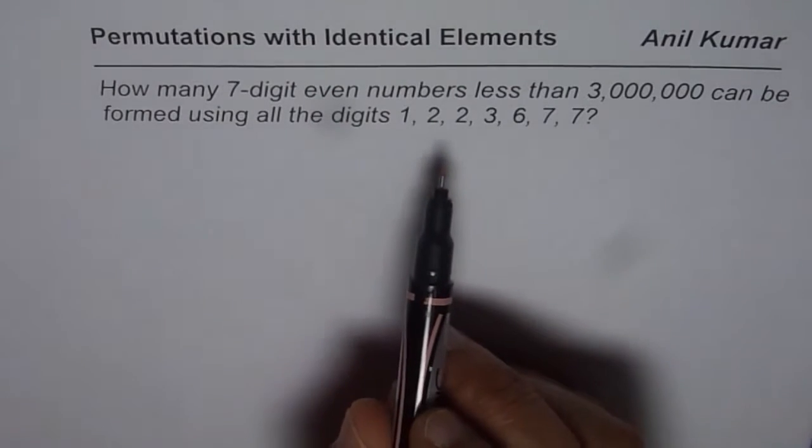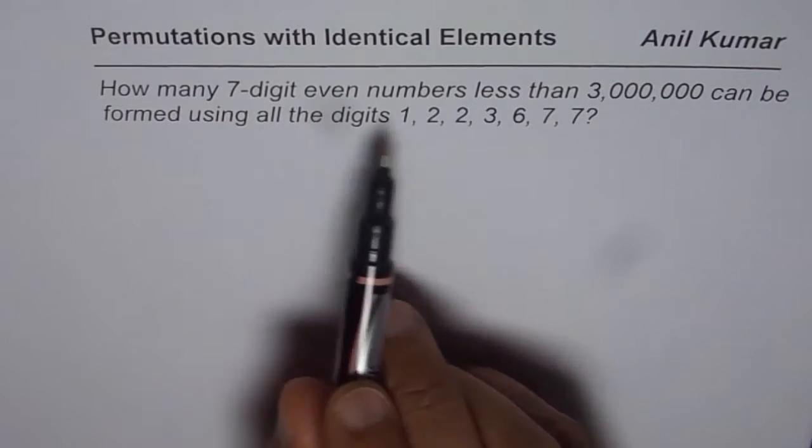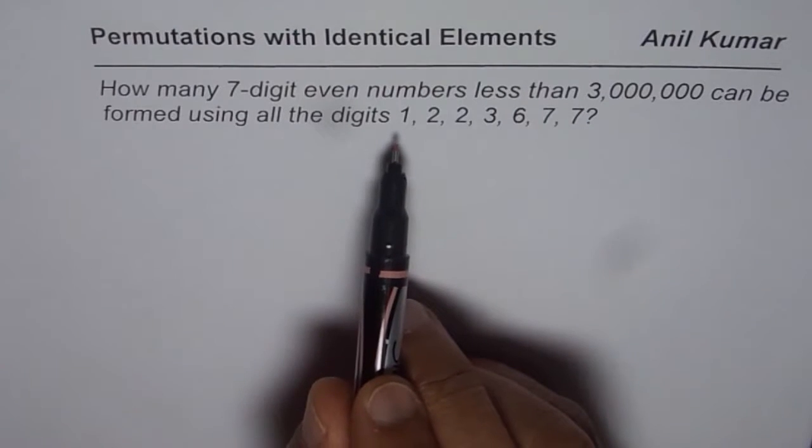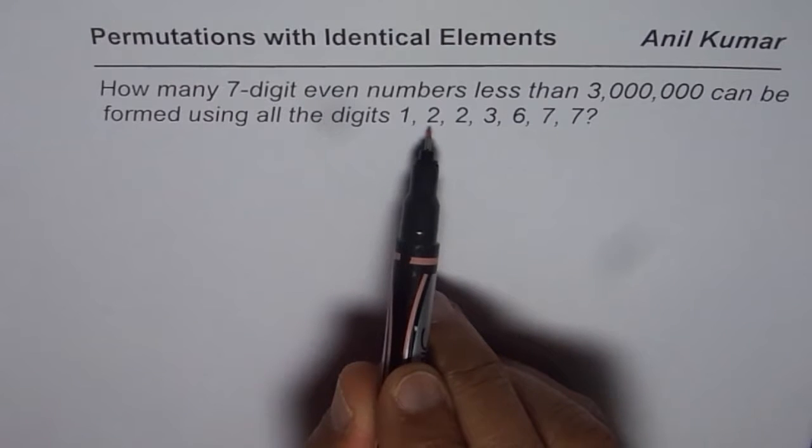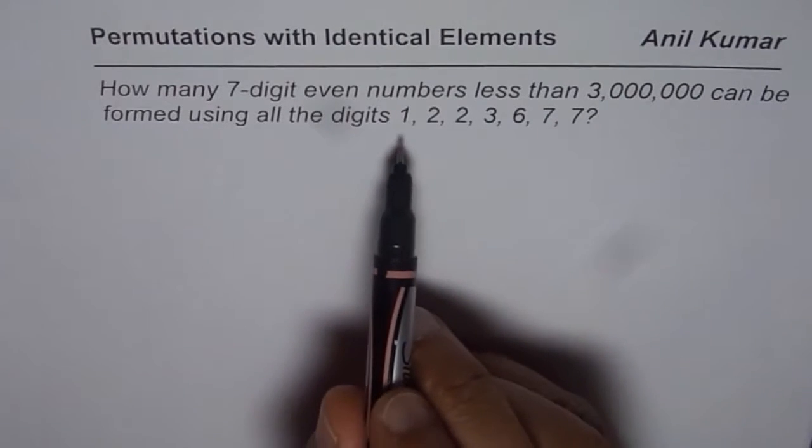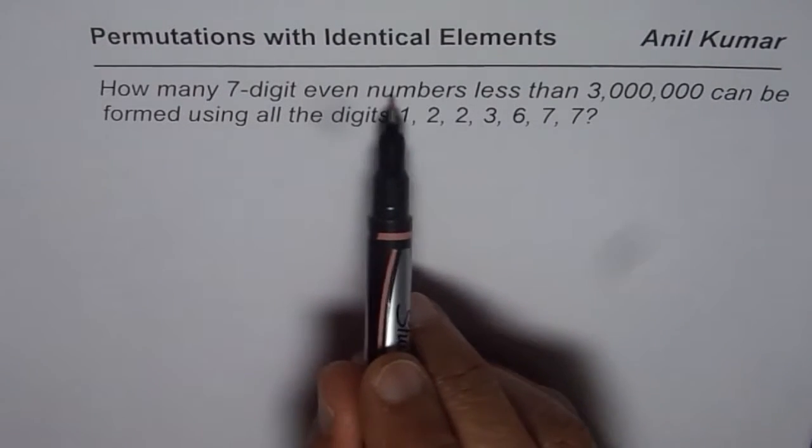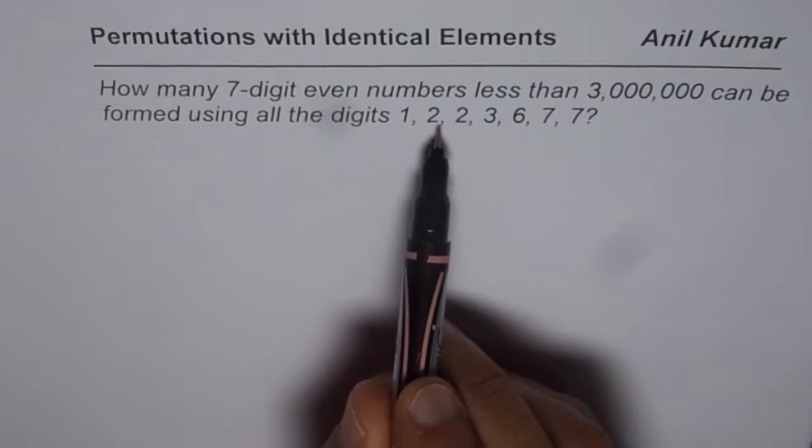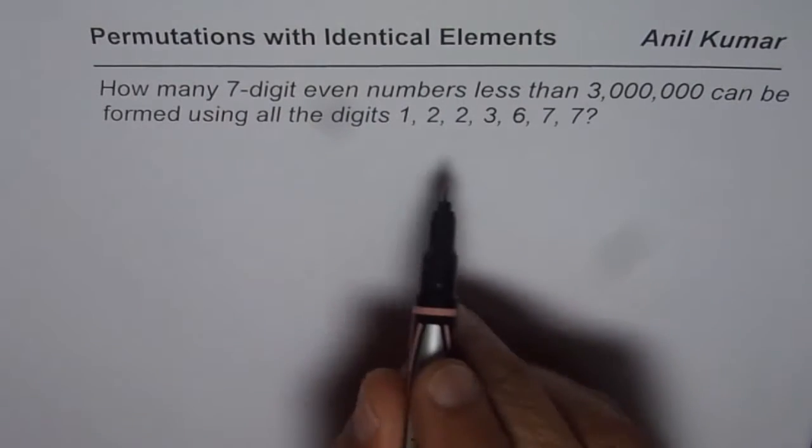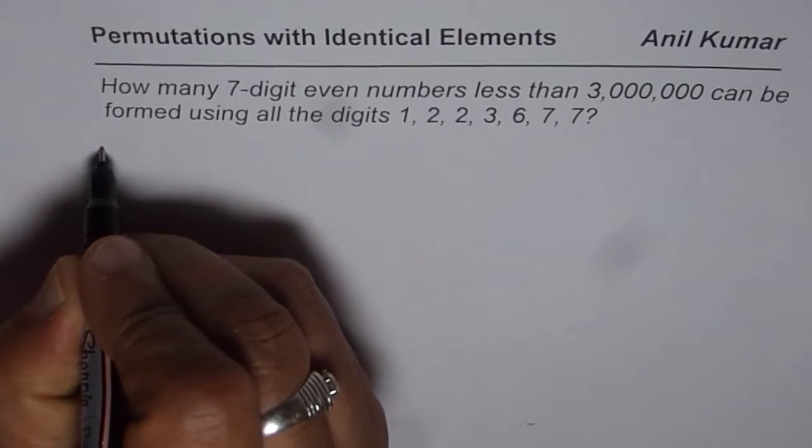When we are looking for digits which are less than 3 million and they are even, the starting digits could be either 1 or 2. If you start with 3, you get a number higher than 3 million. You have to use all 7 at the same time. Even number means the ending numbers could be 2 or 6. So that gives us different cases.